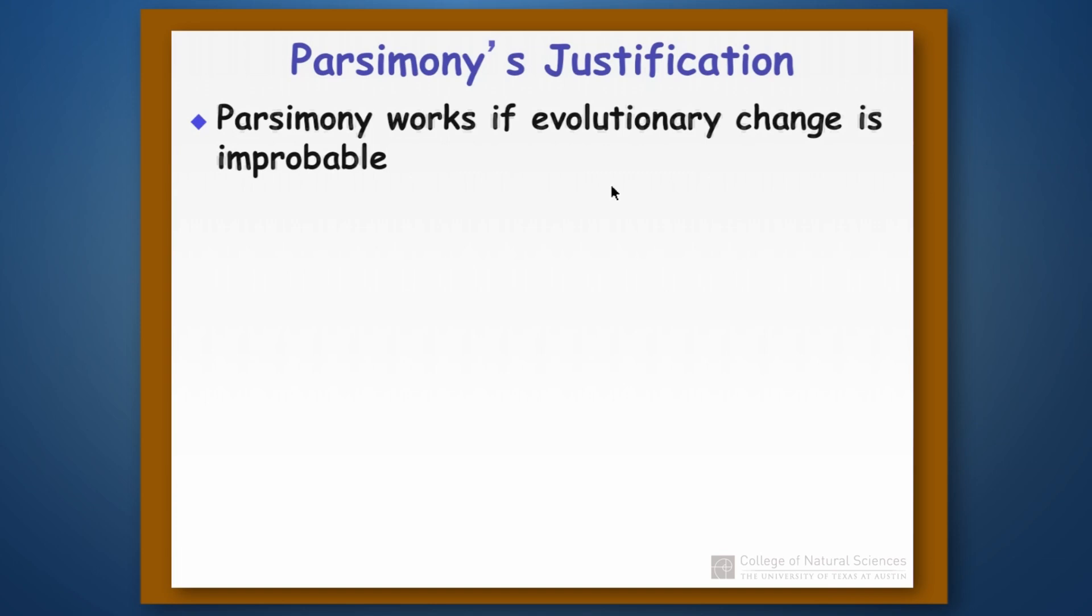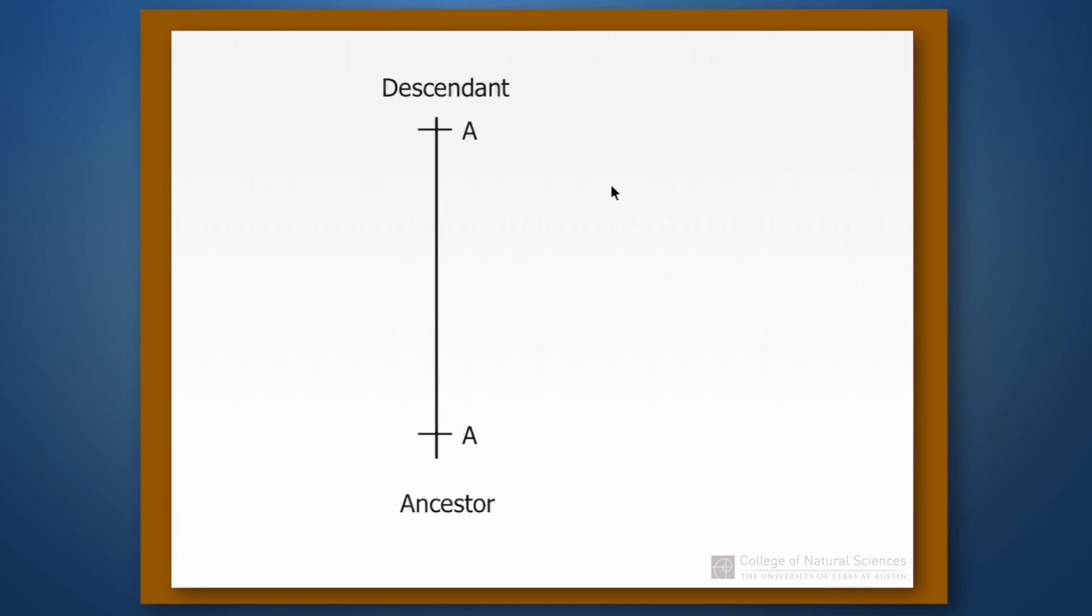So why should parsimony be the right way to do things? Why should we assume that the simplest tree, that is the tree with the least number of steps, is actually the correct tree? And parsimony only really works if evolutionary change is improbable. And what we mean by that is that there shouldn't be a lot of changes taking place between an ancestor and its descendant.